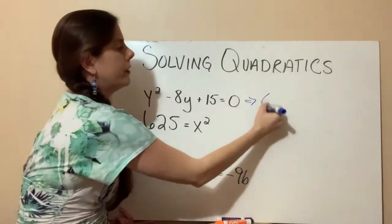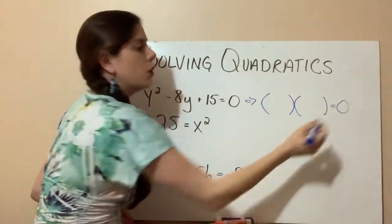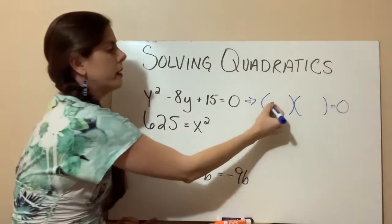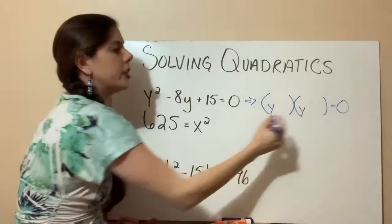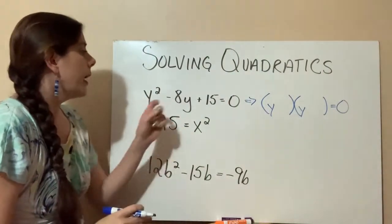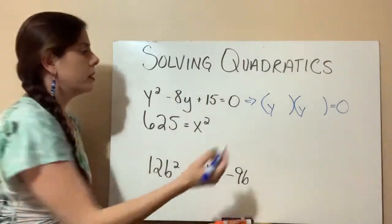So we know we're going to have two sets of parentheses, and it's going to be equal to zero, correct? So our first term is y squared. So we know that each of our parentheses will start with a y. And we know that our signs will be the same. And if we jump back, we'll see that they're both negative.